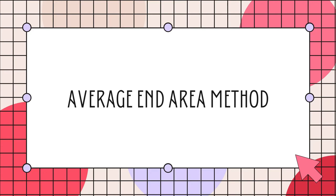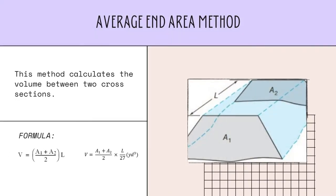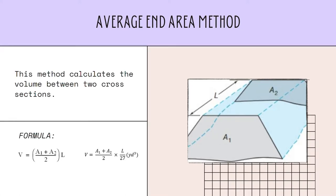I am Anthony and I will report on the average end area method. This method calculates the volume between two cross-sections by taking the average of the two cross-sections and multiplying by the distance separating them. The formula is V equals (A1 plus A2) over 2, times L. When the answer is needed in cubic yards, the formula becomes (A1 plus A2) over 2, times L over 27.